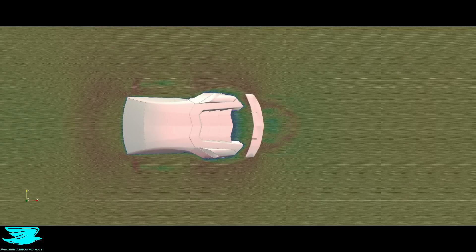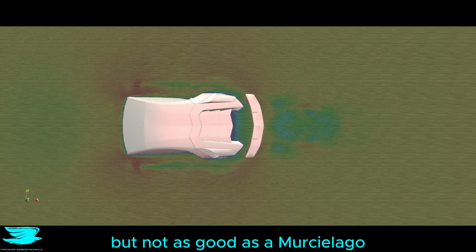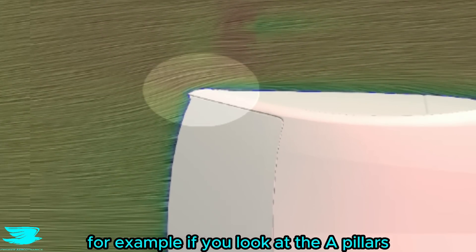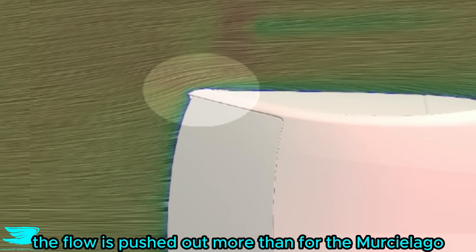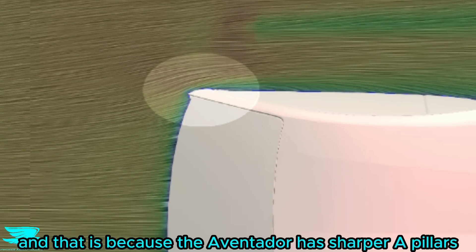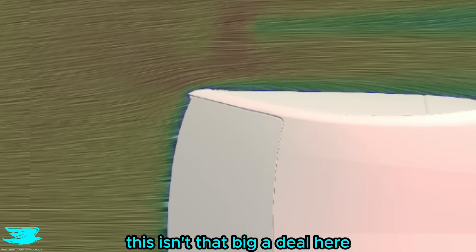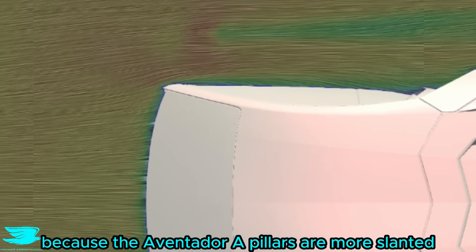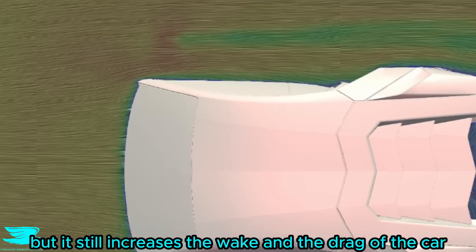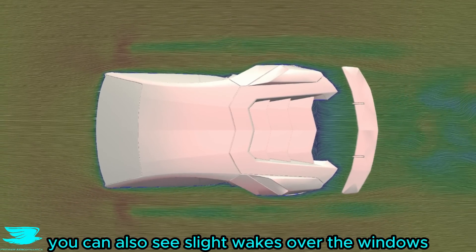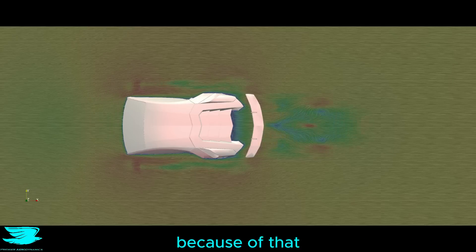Looking from above, the Aventador is still good, but not as good as the Murciélago. For example, if you look at the A pillars, the flow is pushed out more than for the Murciélago, and that is because the Aventador has sharper A pillars. This isn't that big a deal here because the Aventador A pillars are more slanted, but it still increases the wake and the drag of the car. You can also see slight wakes over the windows because of that.